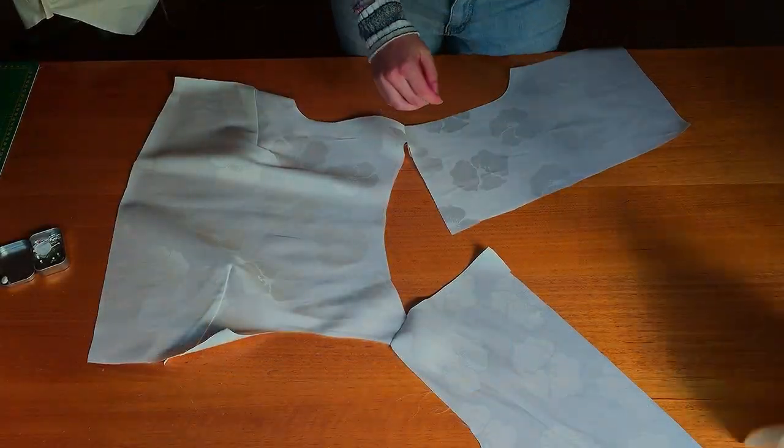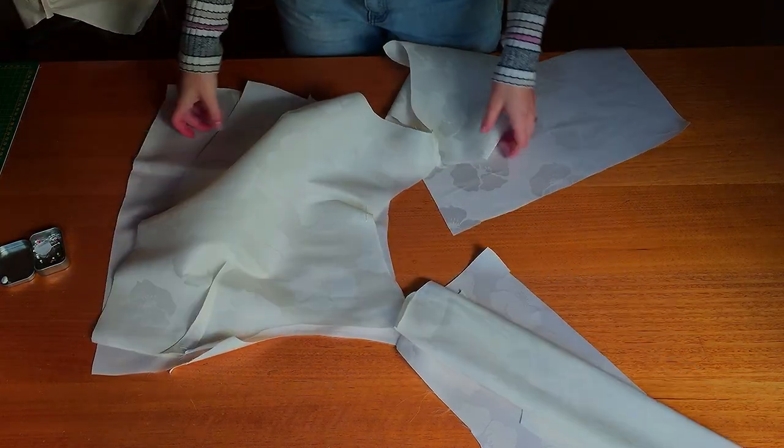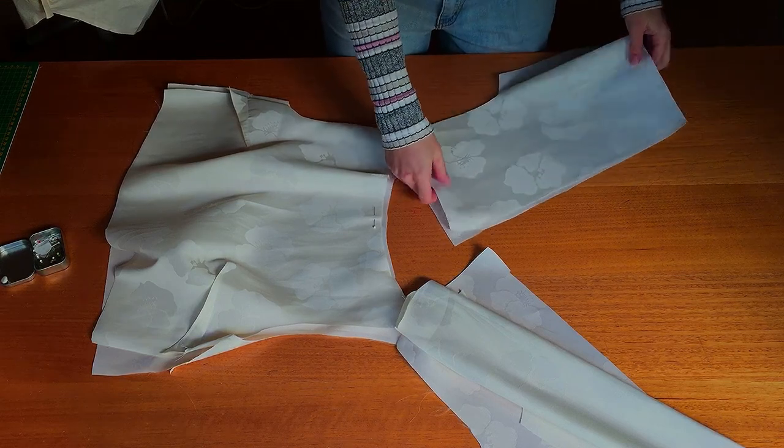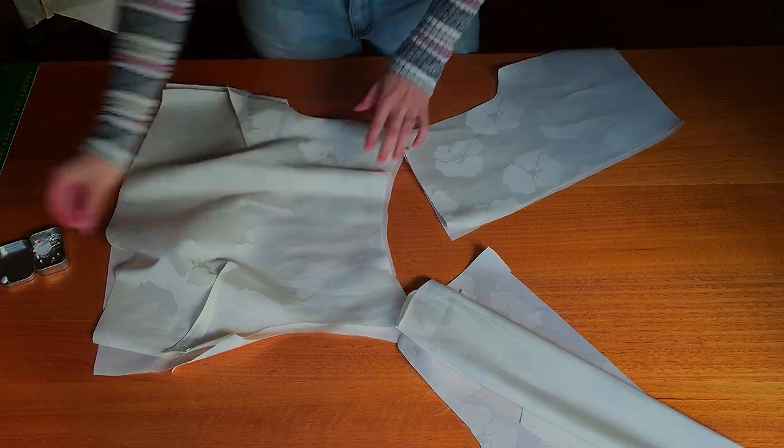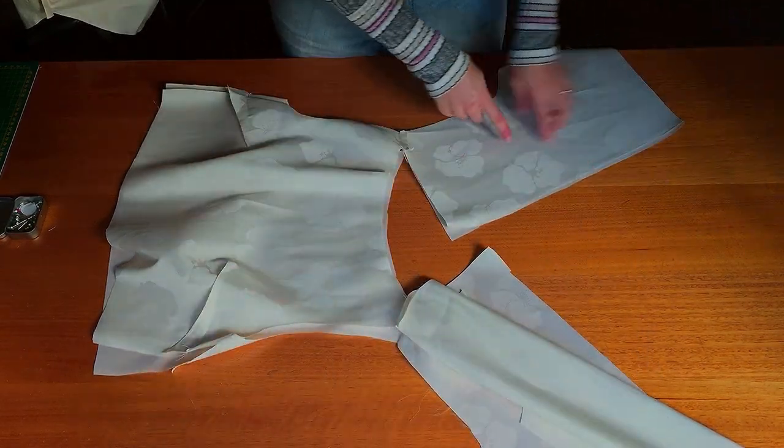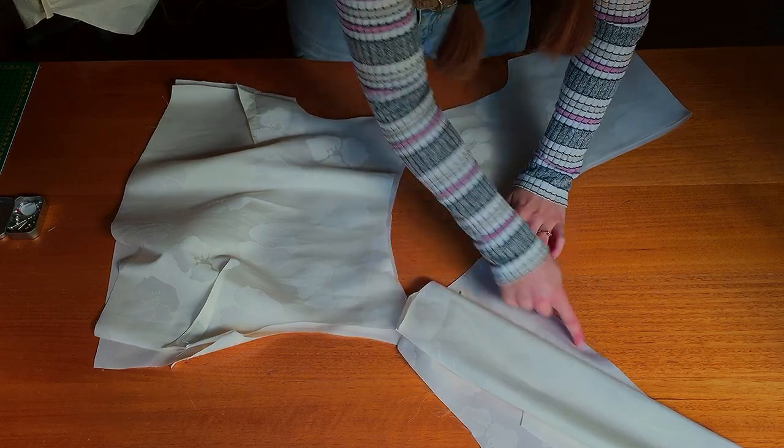Then lay your lining and main right sides together. If you're using an open ended zipper, this is when you'll pin it in place. Otherwise begin pinning your pieces together, as well as placing the rouleau loop in the upper centre back too. You're going to start by pinning and sewing from the centre back through the entire neckline and then back down the centre back on the other side.